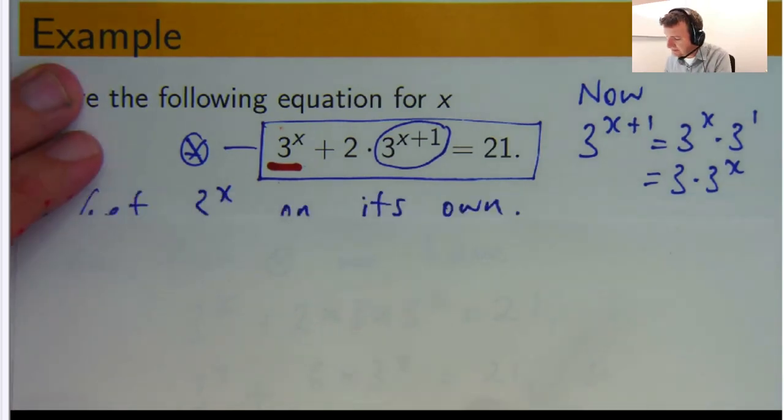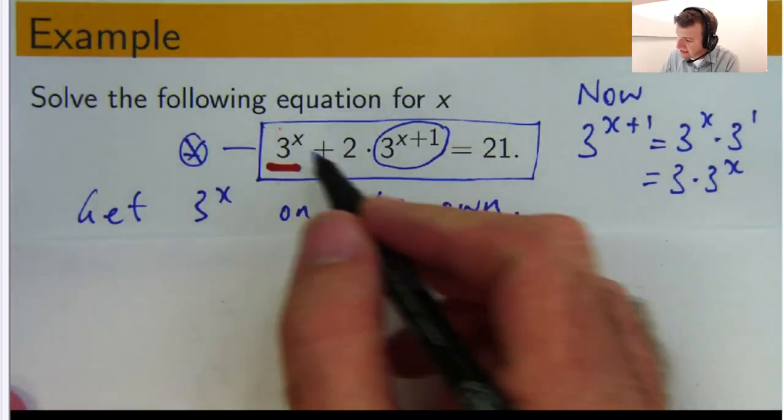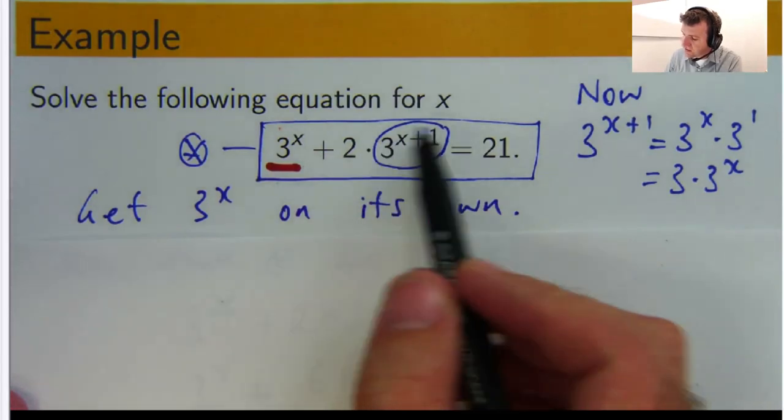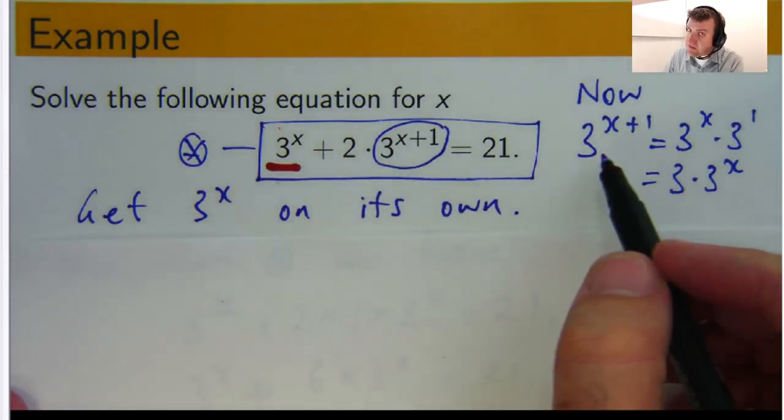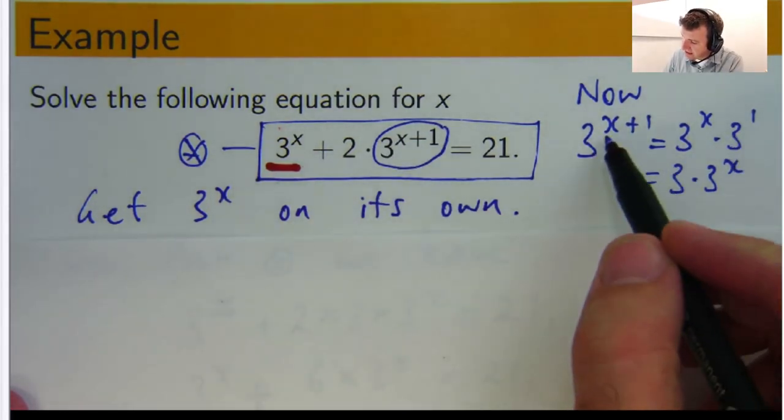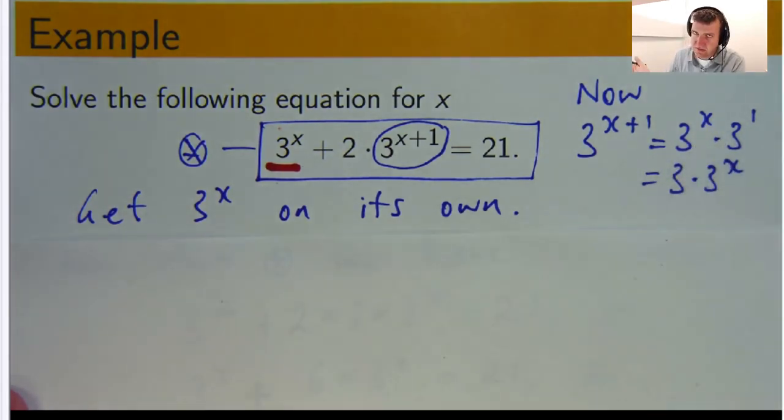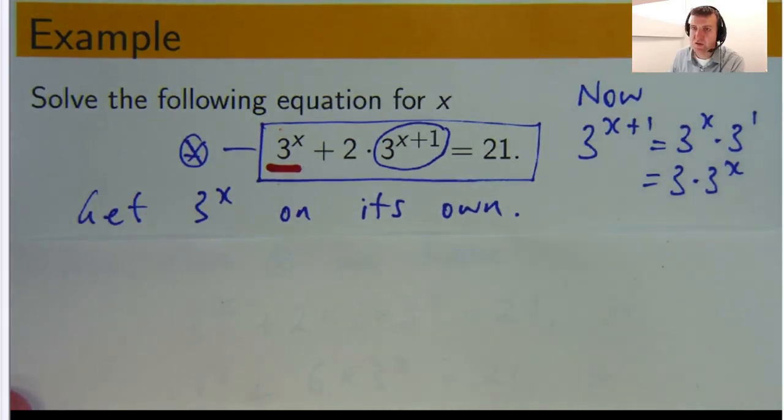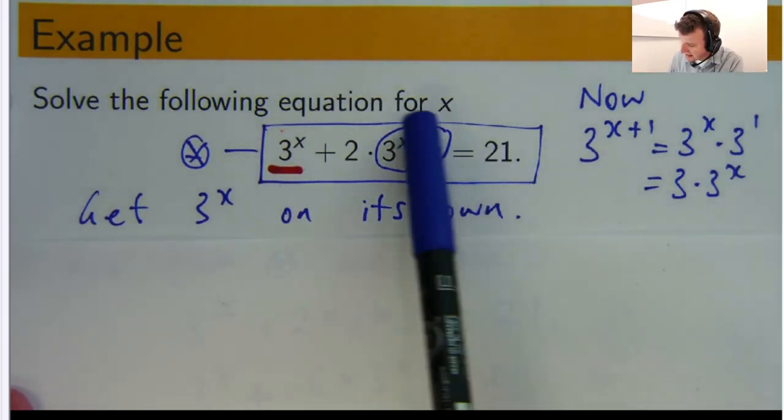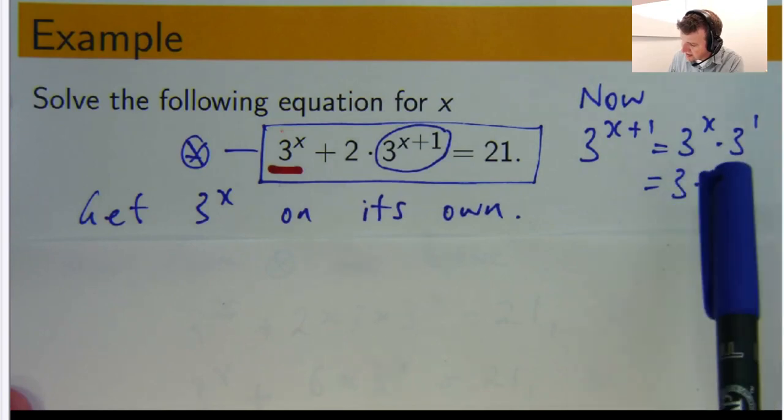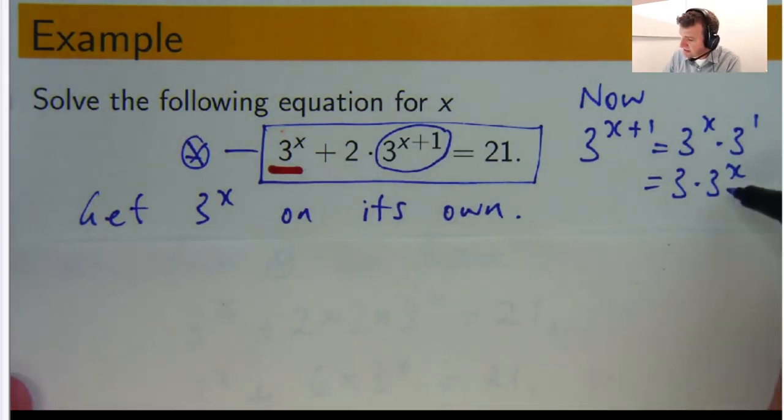Okay, so the idea is to get the 3 to the x on its own. This is almost 3 to the x. And I can use my index laws to write 3 to the x plus 1 equals 3 to the x times 3 to the power 1. And that's just 3 times 3 to the x. So what I've done is I've replaced this with 3 times 3 to the x. So I have a 3 to the x and a 3 to the x.